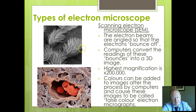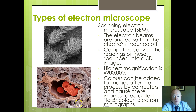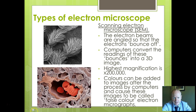In the scanning electron micrograph, the electron beams are angled so that electrons bounce off the outside of the specimen. This produces a 3D image, with a magnification of perhaps up to 200,000 times. SEM images are often artificially coloured — for example, red blood cells have been coloured red here to make them immediately recognisable.